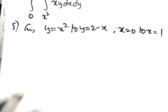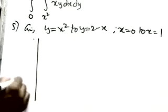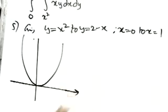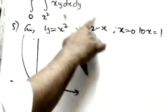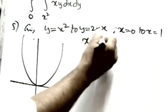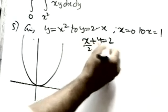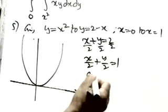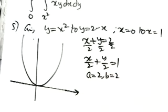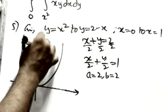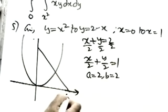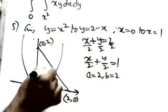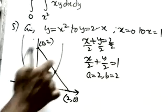First we have to draw the figures. y equals x squared is a parabola opening upwards. For the line y equals 2 minus x, bring it to intercept form: x by 2 plus y by 2 equals 1. So the x-intercept is 2 and y-intercept is 2. We plot the point 2 comma 0 and 0 comma 2 for the line, with origin at 0.